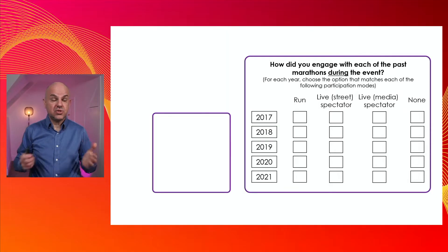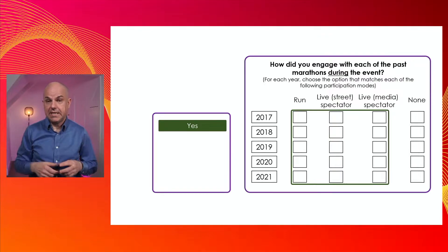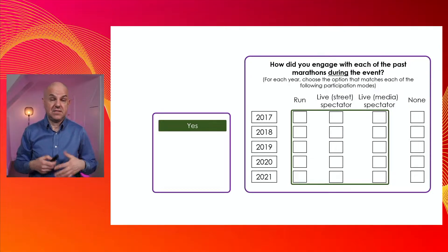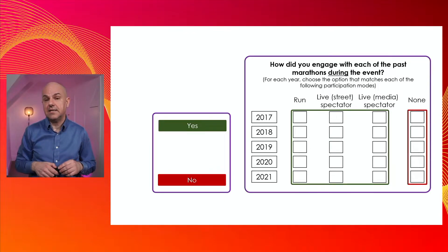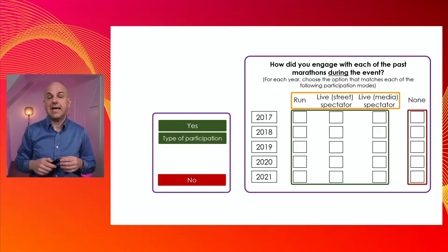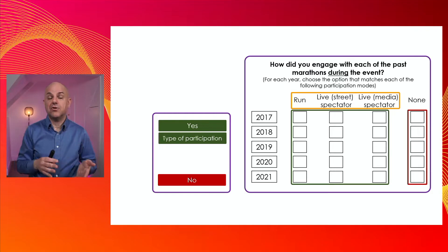Let's see what information we get by changing both the question and the possible answers. To start with, we can continue to get our yes and no — if participants tick any box for running, live street spectator, or live media spectator, it means they have attended the event; if they say none, it means they didn't attend that year. But we can get more information than that: the type of participation, i.e., in what capacity they attended.